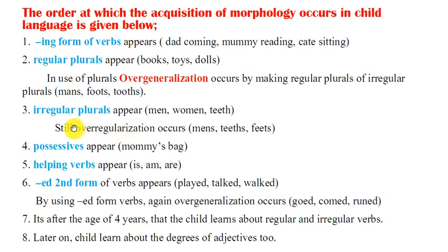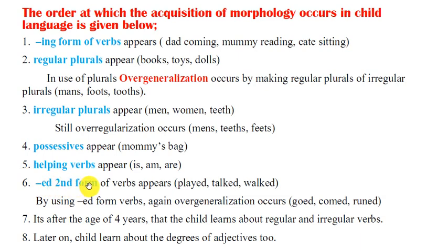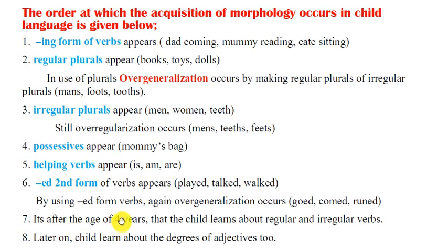Then irregular plurals appear — for example, 'men,' 'women,' 'teeth' — though overgeneralization still occurs. Then possessives appear — for example, 'mommy's.' Then helping verbs appear — 'is,' 'am,' 'are.' Then the '-ed' past tense form of verbs appears — for example, 'played,' 'talked,' 'walked.' Overgeneralization occurs again, for example 'goed,' 'comed,' 'runned.' It is after age four that the child learns about regular and irregular verbs.